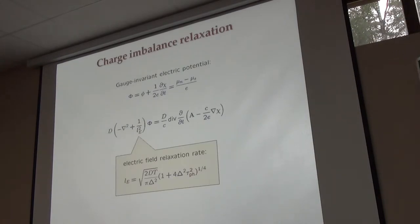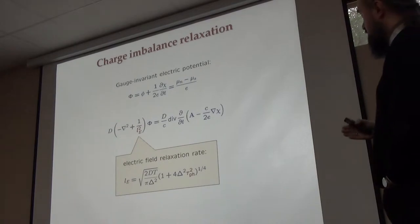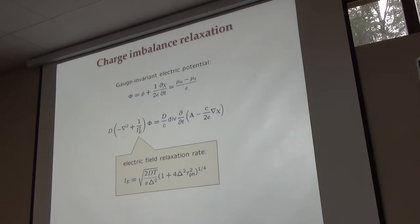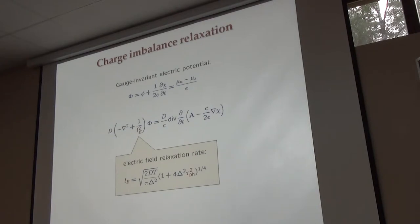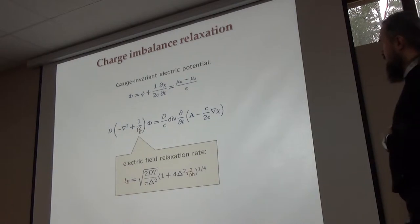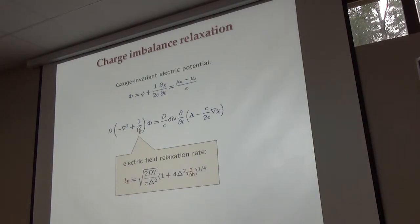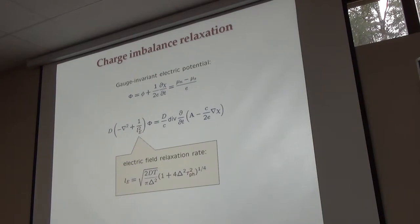One more thing to mention here is the concept of charge imbalance, which is described by this gauge-invariant electric potential given by the sum of the electric potential and the derivative of the phase of the order parameter — understood as the difference between the chemical potential of the normal subsystem and the chemical potential of the superconducting subsystem. In equilibrium they are equal and the imbalance vanishes. If you write an equation for the imbalance, an important length scale appears: L_e, the electric field relaxation length, which is basically xi times the phonon relaxation rate. When relaxation is very slow, this length is much larger than xi.